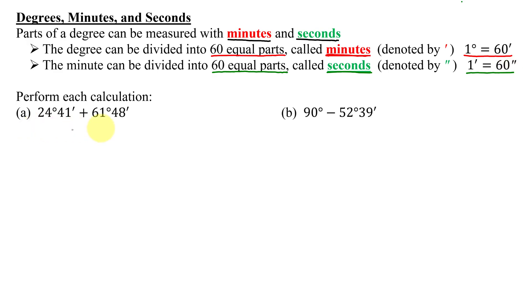Now I'm going to complete these two calculations involving degrees and minutes. In the first one, I need to add 24 degrees 41 minutes and 61 degrees 48 minutes. The best way to do this is to line things up vertically. So I have 24 degrees 41 minutes, and then I'm going to add to that 61 degrees 48 minutes.